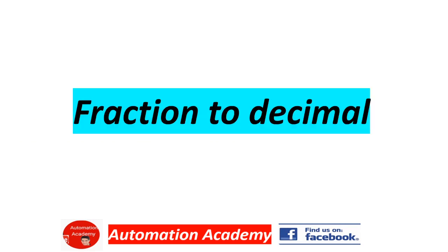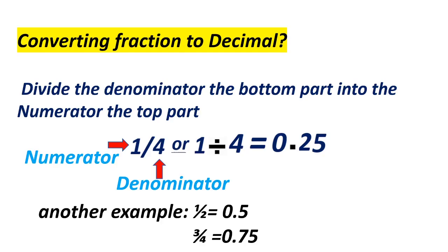Our next topic is Fraction to Decimal. Converting fraction to decimal: divide the denominator, the bottom part, into the numerator, the top part. For example, 1/4, where 1 is the numerator and 4 is the denominator, equals 1 divided by 4 equals 0.25. Another example: 1/2 equals 0.5, 3/4 equals 0.75.